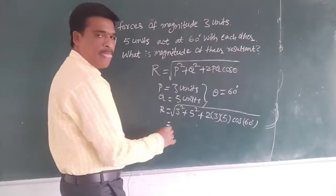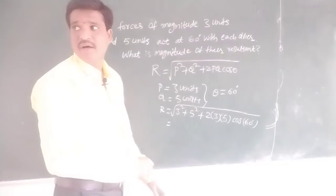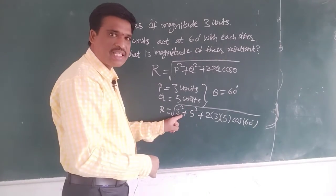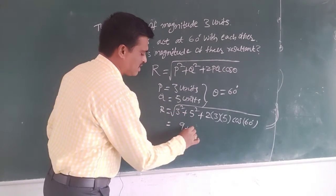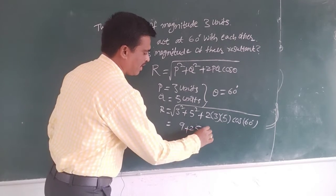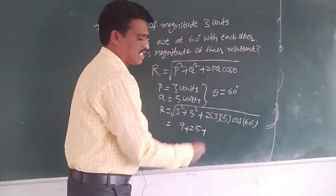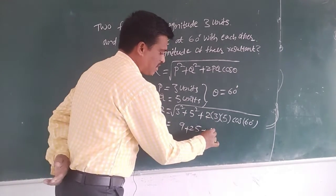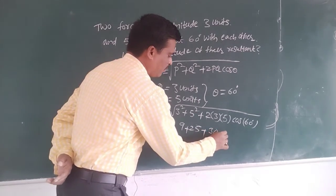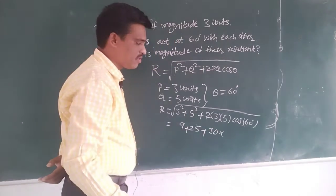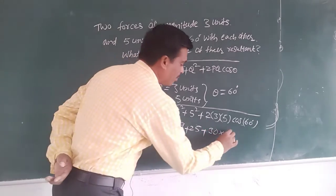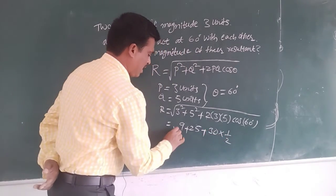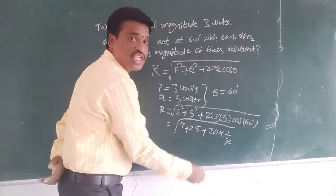Under root. What is the value of 3 squared? 9, plus 5 squared? 25, plus 2 into 3 is 6, into 5 is 30, into cos 60 is how much? 1 by 2.